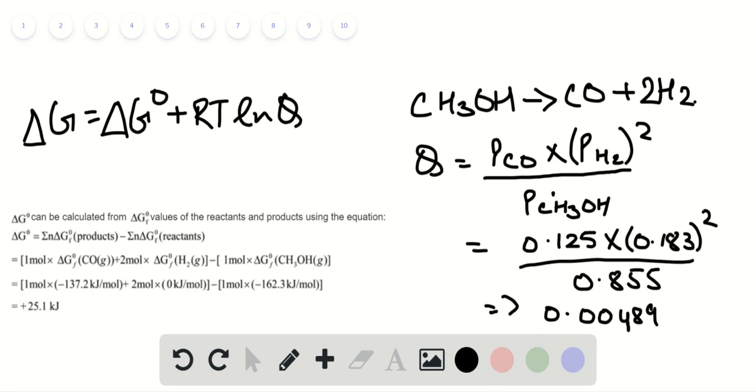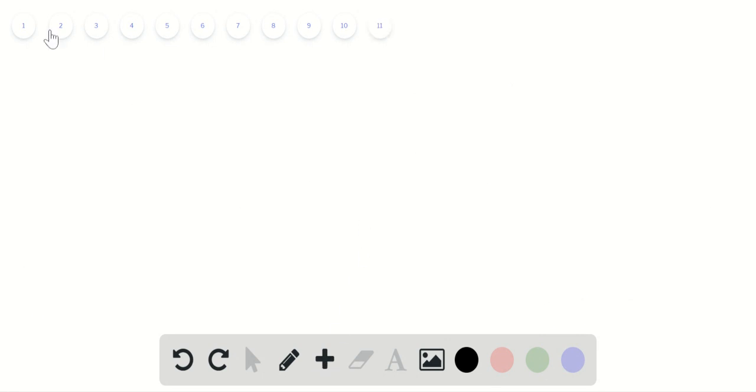Upon substituting the given data into the equation, we have delta G equals delta G standard plus RT natural log Q.